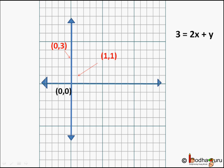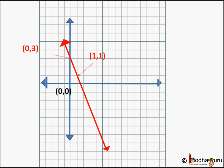If we join these points, we get this line which represents the linear equation 3 = 2x + y. This red line represents 3 = 2x + y, or 2x + y - 3 = 0.